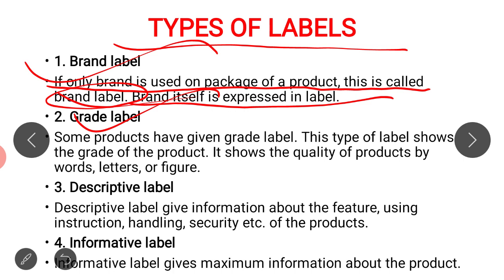Another type of label is the descriptive label. As the name indicates, a descriptive label explains the various uses of the product and instructions regarding how to use or make a particular product. A descriptive label contains the full description of a product — what its features are, how to use it, and various instructions related to the product.